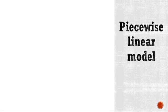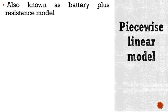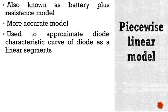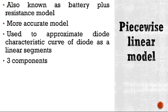The piecewise linear model, also known as the battery plus resistance model, is a more accurate model than the ideal diode assumption. This method is used to approximate the diode characteristic curve as a series of linear segments — that is, it approximates the exponential curve of the diode with a straight line. In this model, the real diode is modeled as three components connected in series.